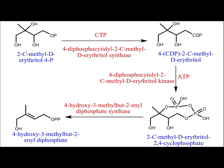In the presence of ATP and the enzyme diphosphocytidyl methylerythritol kinase, a phosphate group is added at the position-two hydroxyl group of CDP-methylerythritol. This converts the CDP-methylerythritol into a cyclic phosphate structure — methylerythritol 2,4-cyclophosphate (2C-methyl-D-erythritol 2,4-cyclophosphate) — where phosphate groups at positions two and four are attached to each other, forming a cyclic structure.